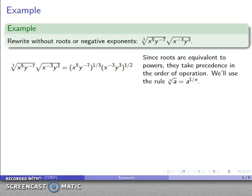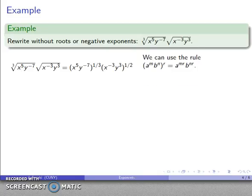So now I have an expression of that form, which eliminates the roots. Now, I can also use the rule if I have a power of a power. I multiply the two exponents. So here I have x to the 5, y to the minus 7 to the 1 third, x to the minus 3, y to the 3 to the 1 half. And I'm going to multiply the 1 third by each of these exponents, the 1 half by each of these exponents. And so that'll give me x to the power of 5 thirds, y to the power of minus 7 thirds, this to the power of 1 half. I'm going to multiply it, negative 3 halves and positive 3 halves.